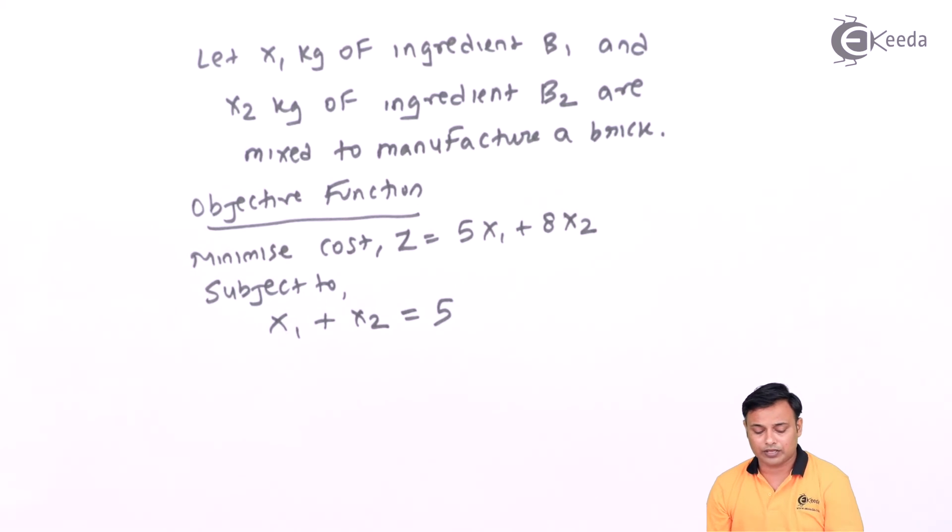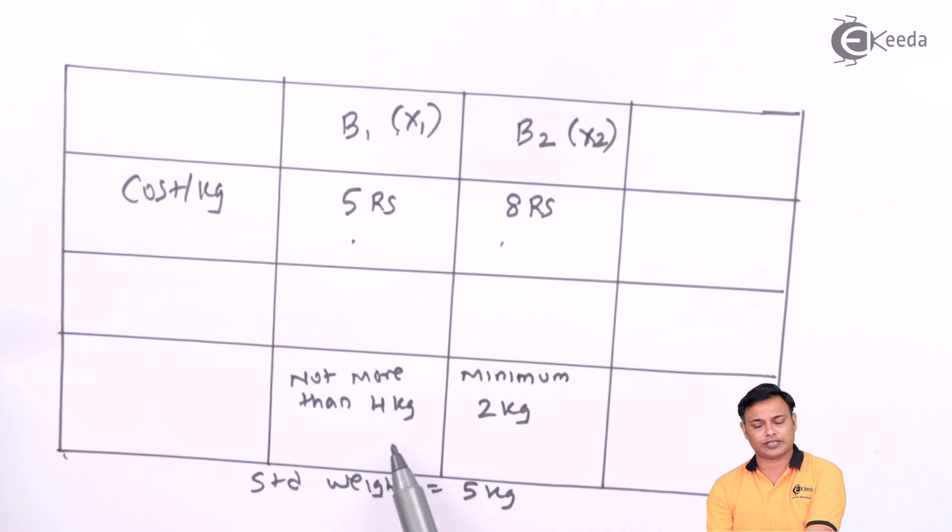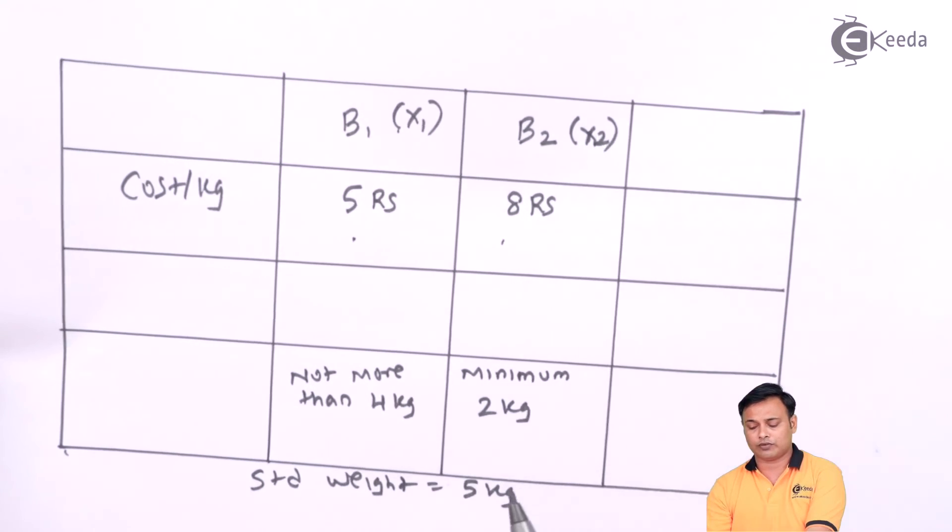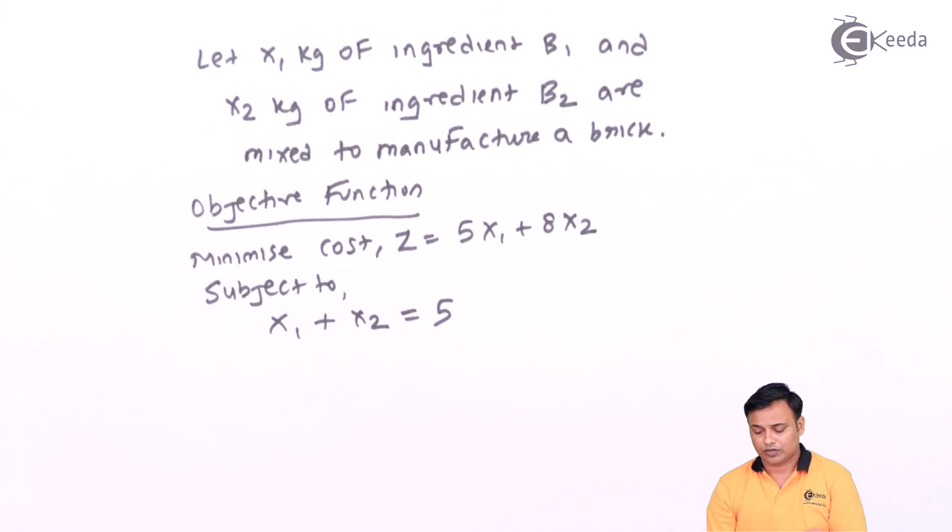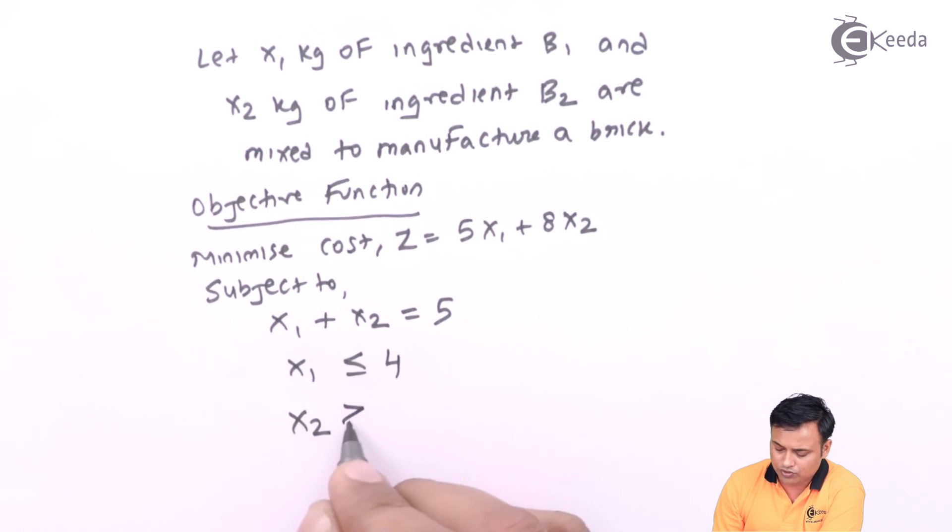My next constraint: clearly specified that x1 should not be more than 4 kg and x2 should be minimum 2 kg. So x1 less than or equal to 4 and x2 greater than or equal to 2.